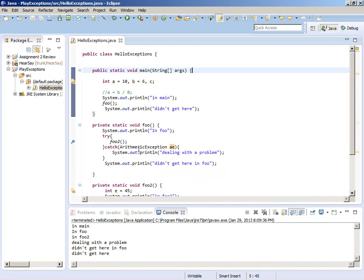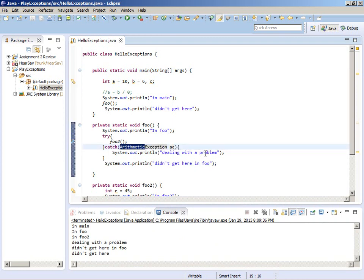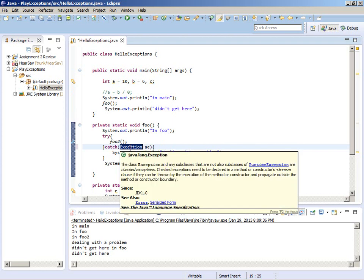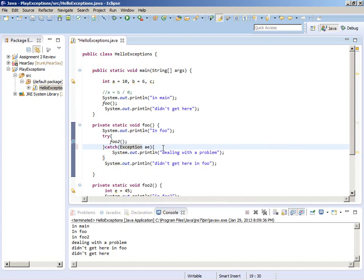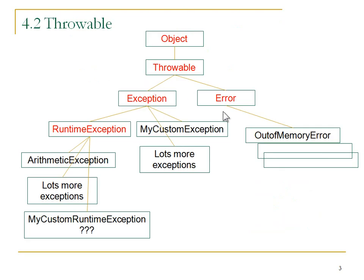What if I had put 'catch Exception' instead of 'catch ArithmeticException'? That catch block would catch everything that is an Exception - all of these kinds of things that can go wrong. That's not a good practice. You should try to catch the most specific things that you can.